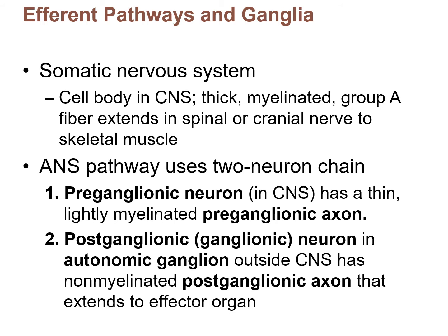These next two slides have a lot of text, but there'll be a figure following them and I'll explain it all again. Motor or efferent pathways are either somatic or autonomic. Recall that in the somatic nervous system you have one fiber — one axon of a neuron, called a lower motor neuron — which extends from the spinal cord all the way to the muscle at the neuromuscular junction. So it's just one neuron leaving the spinal cord going all the way to the skeletal muscle.